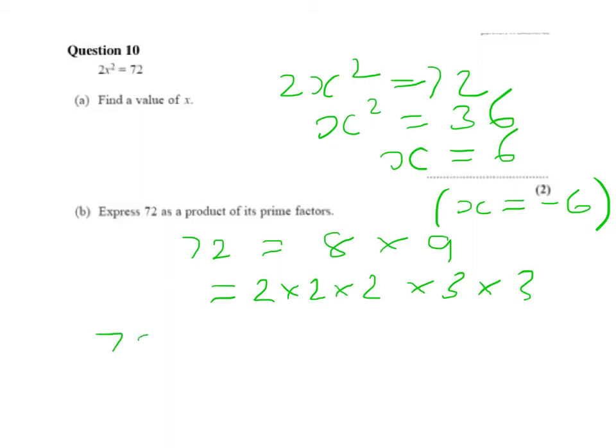Another way it could have been done, you could have said 72 equals 2 times 36, which is 2 times 6 times 6, which is 2 times 2 times 3, times 2 times 3, giving you exactly the same answer. Factors in a different order makes no difference.